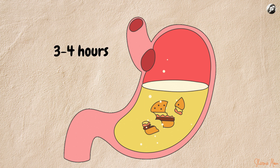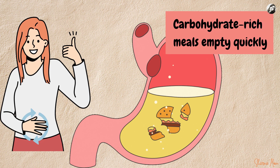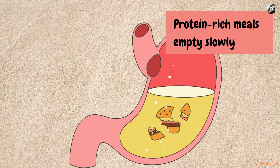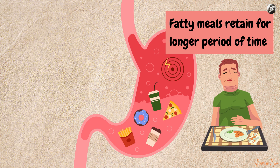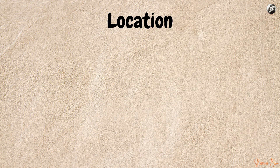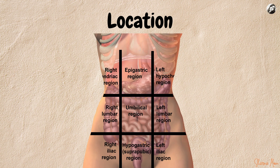On an average, food is retained in the stomach for about three to four hours, but this duration varies based on the quality of the food. Carbohydrate-rich meals tend to empty quickly, while protein-rich foods empty slowly, and fatty meals are retained in the stomach for a longer period of time.